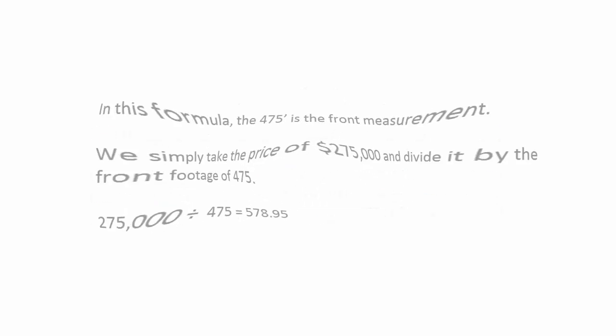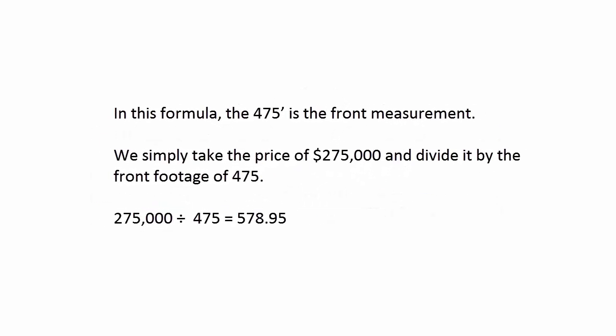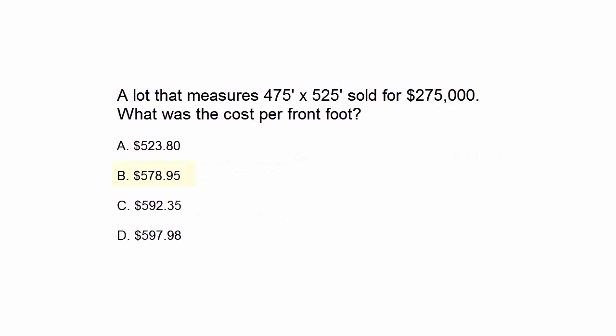So in this problem, we have 475 being the front measurement. We take 275,000 and divide it by the front footage. 275,000 divided by 475 equals $578.95. Really simple.